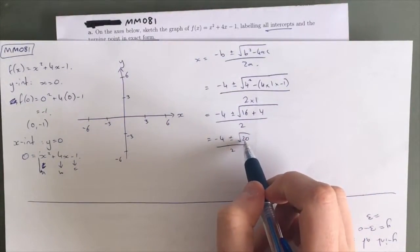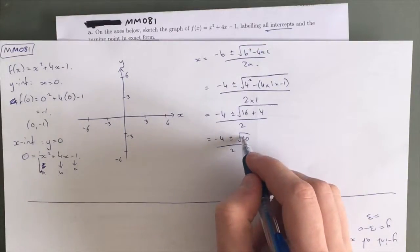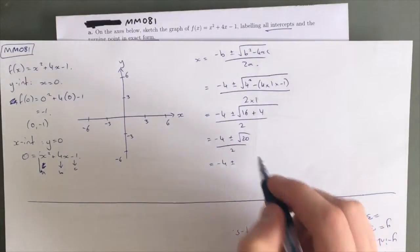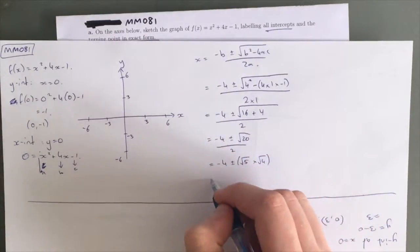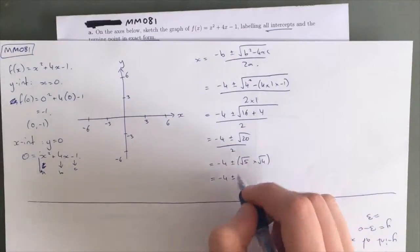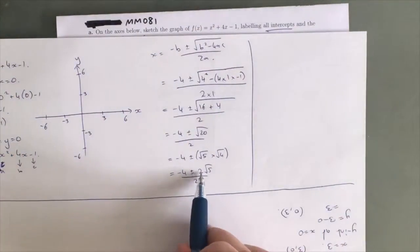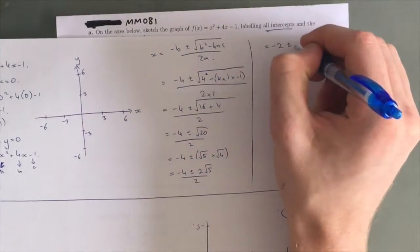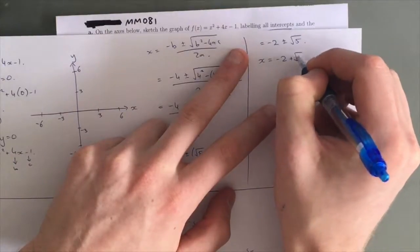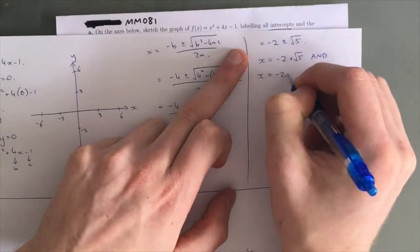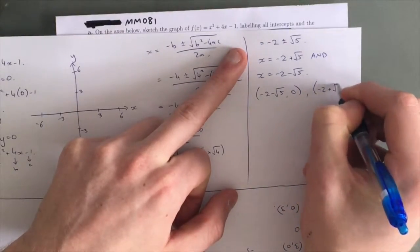Because 20 is the same as 4 times 5, we can bring the 4 out of the square root and change it to a 2, since the square root of 4 is 2. So this is the same as negative 4 plus minus the square root of 5 times the square root of 4, and the square root of 4 is 2. We then take out a factor of 2 in all terms, which takes us to negative 2 plus minus root 5. So our x-intercepts are (-2 - √5, 0) and (-2 + √5, 0).